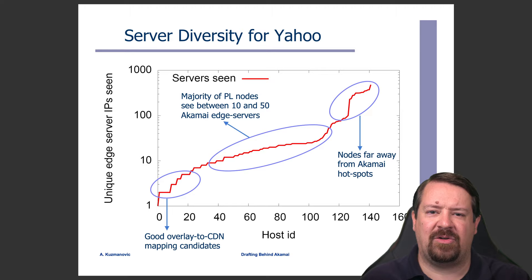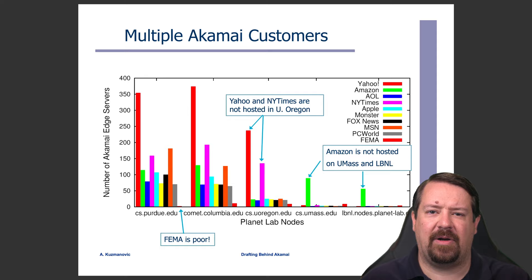We can also look at results for particular domain names. Depending on which vantage point — meaning which PlanetLab host — is doing the lookup, some hosts only see a few servers, many see 10 to 50 servers, and a smaller number see many, many servers. Looking at different Akamai customers compared to one another, we can see clearly different levels of service: some domains are not hosted in some locations, others are hosted in many locations, and some are hosted in very few locations.